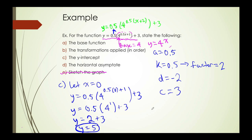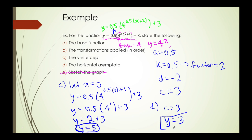Finally, let's find the horizontal asymptote. We notice that in this equation the c value is equal to 3. So our horizontal asymptote will simply be y is equal to 3.